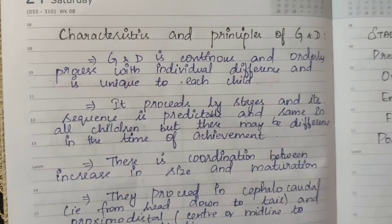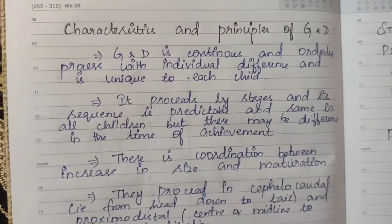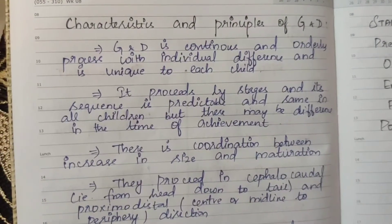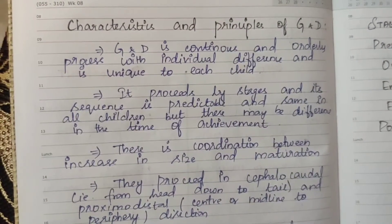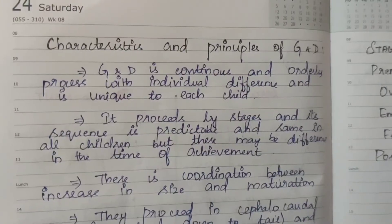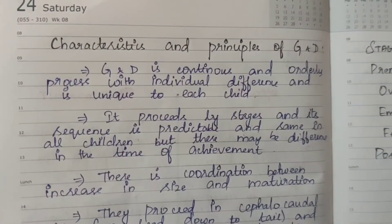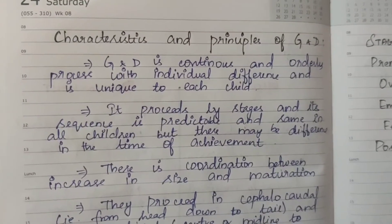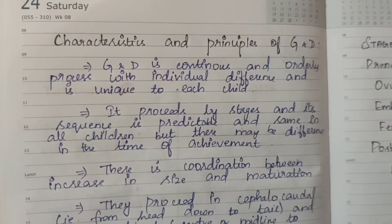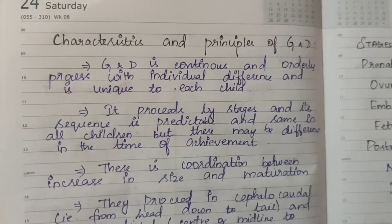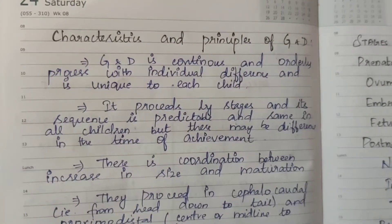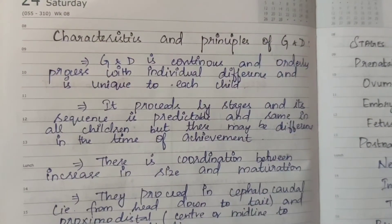Next: characteristics and principles of growth and development. Growth and development is a continuous and orderly process with individual differences, and is unique to each child. Growth and development is a continuous process — it does not pass or stop. Growth in height and weight and the development of skills are increased in an orderly process.